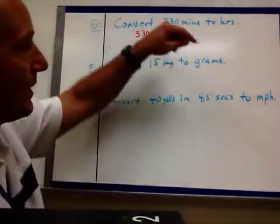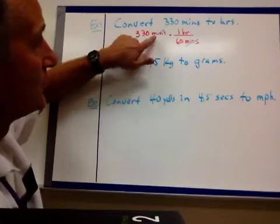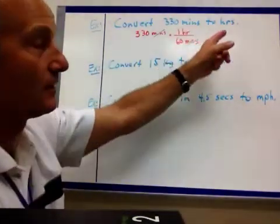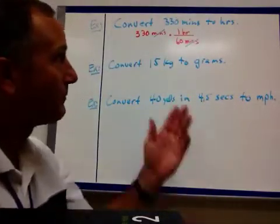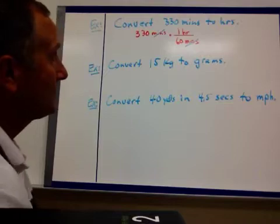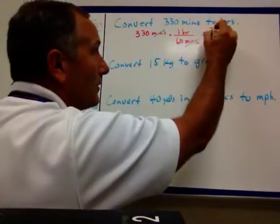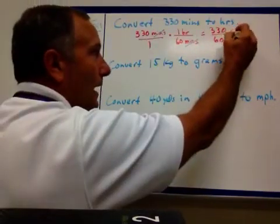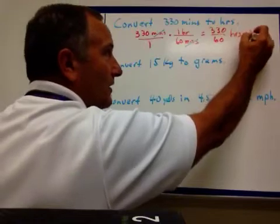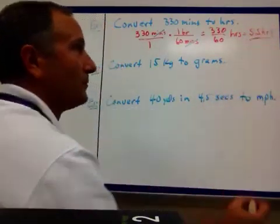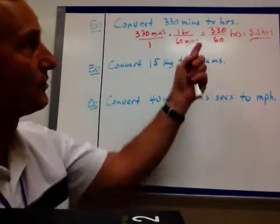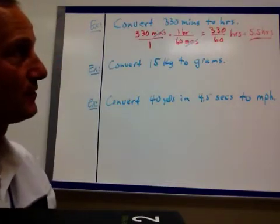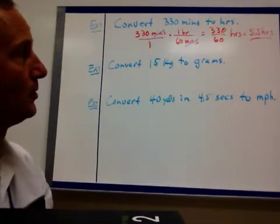So then that way, I can cancel out my minutes. If I wrote it the other way, I would have minutes over hours. I couldn't cancel my minutes. Notice now that when I write it this way, I cancel out the minutes as far as units go, and I've got hours left over on top. That's what I want. I want to know how many hours that represents. So 330 over 60, remember I can write this over one, hours. When you divide that into it, you get five and a half. 60 goes into 300 five times. 30 minutes over 60 minutes is a half of an hour, so 5.5 hours.